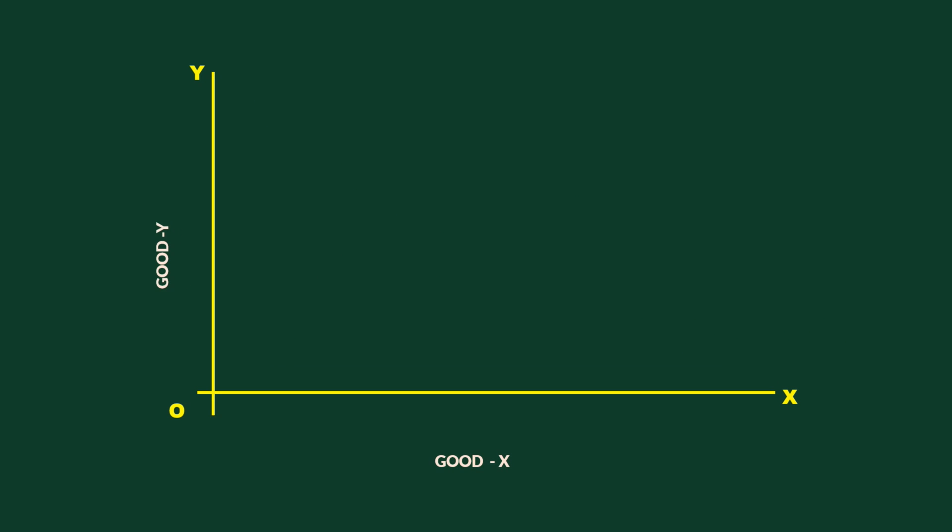Look at this graph. As usual, good Y is measured along the Y axis and good X is measured along the X axis. Given the income of the consumer and the prices of the two goods, we get the price line PL1. Indifference Curve IC1 is tangent to the price line at point E1. The consumer is in equilibrium at that point. He consumes M1 units of good X. As we are going to trace the price consumption curve for good X, we shall focus on the quantity consumed of that good.